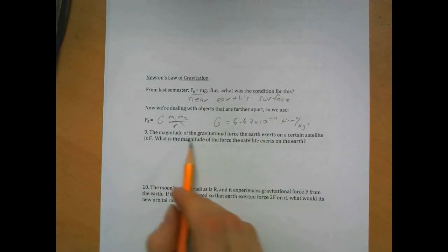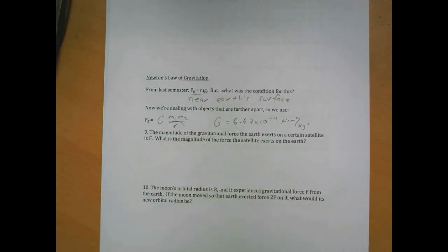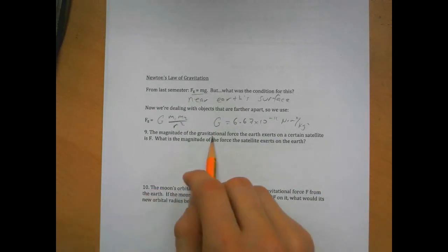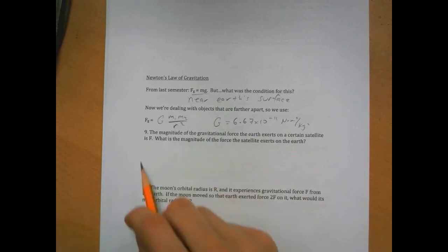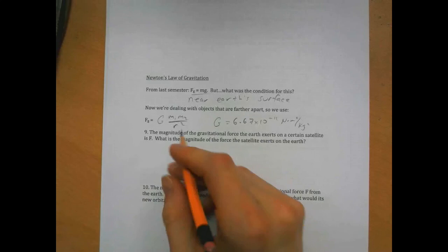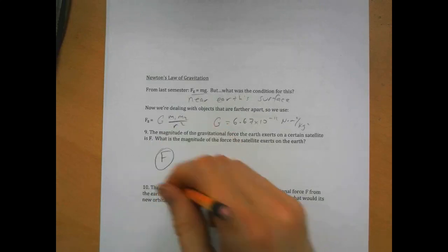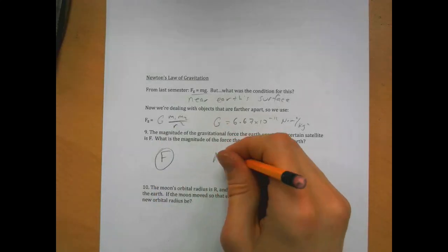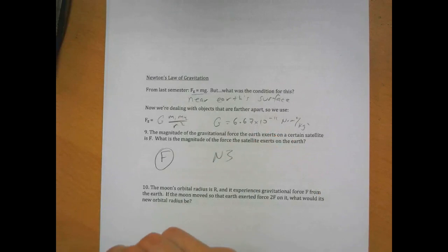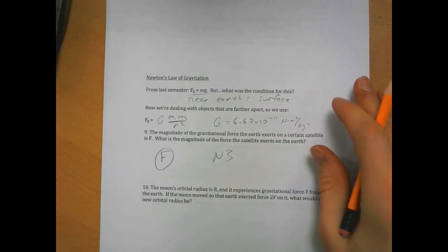So that's our formula. I have people think about it in class, but if the Earth exerts a force of F on the satellite, what's the magnitude the force the satellite exerts on the Earth? It's F. Why? Newton's third law, equal and opposite forces.